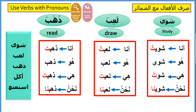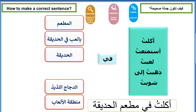Use the other verbs with the different pronouns and try to use them. أكلت في المطعم، استمتعت في الحديقة صباحاً، لعبت في الحديقة، ذهبت إلى منطقة الألعاب، أكلت في المطعم الدجاج اللذيذ، وأكلت في مطعم الحديقة دجاجاً لذيذاً.